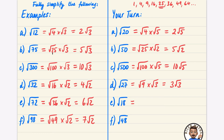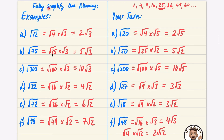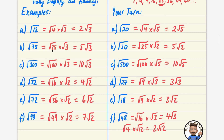For √18: 9 is a factor, so √9 × √2 = 3√2. For √48: it's in the 4 times table but also the 16 times table — 16×3 = 48, so √16 × √3 = 4√3. Note: if you had used √4 × √12 = 2√12, that's not fully simplified because √12 = 2√3. In the next video I'll explore what to do if your answer still needs simplifying.